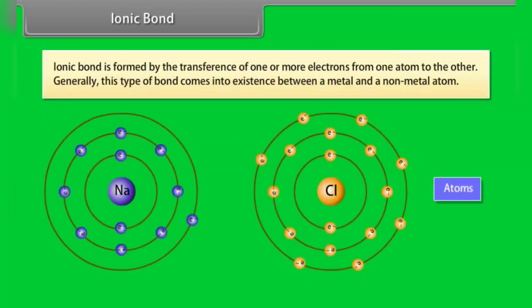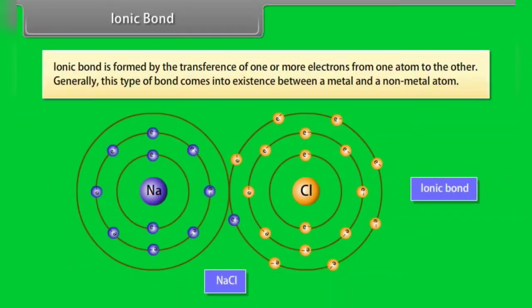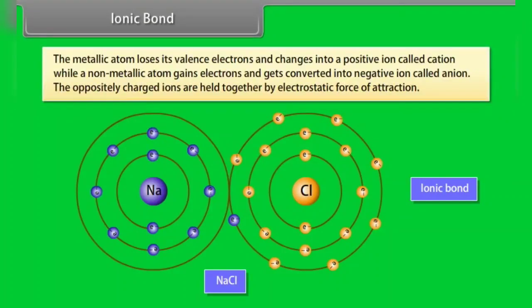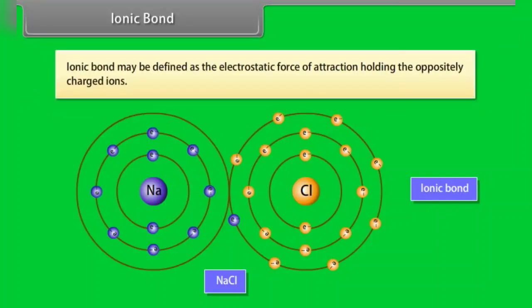Ionic bond is formed by the transference of one or more electrons from one atom to another. Generally, this type of bond comes into existence between a metal and a non-metal atom. The metallic atom loses its valency electrons and changes into a positive ion called a cation, while a non-metallic atom gains electrons and gets converted into a negative ion called an anion. The oppositely charged ions are held together by electrostatic force of attraction. Ionic bond may be defined as the electrostatic force of attraction holding the oppositely charged ions.